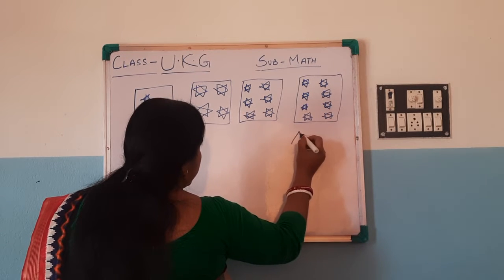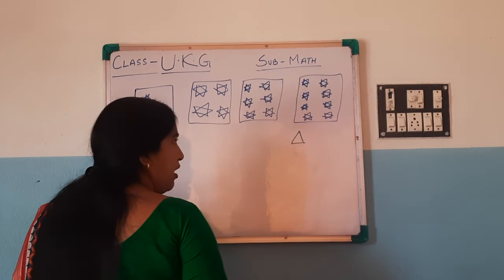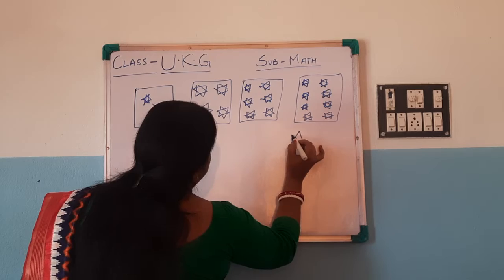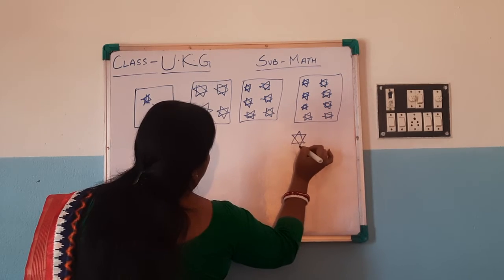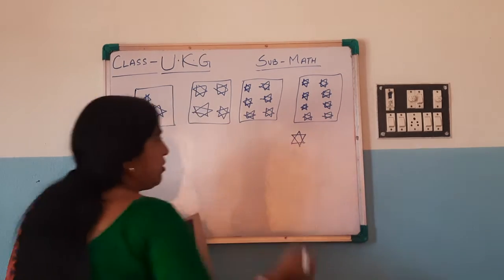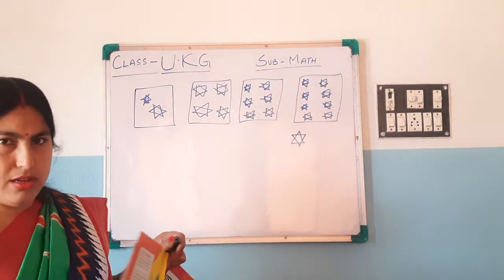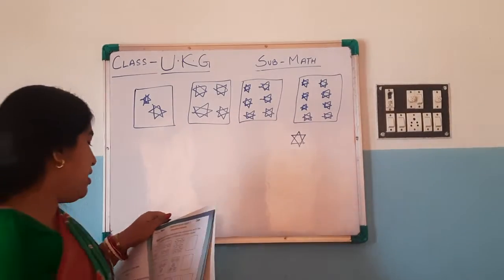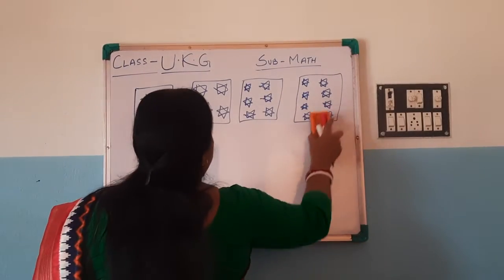Look. First draw a triangle, then draw a reverse triangle. Okay, and then the next box.